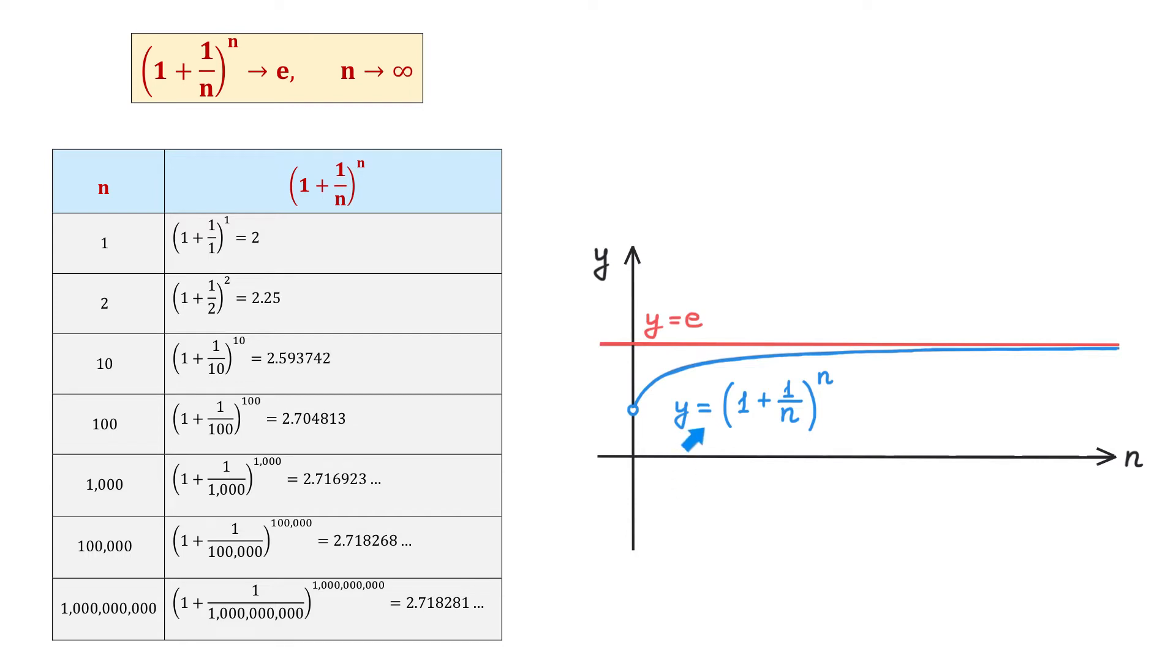And below, we see the graph of the equation y equals 1 plus 1 over n to the n's power. What we also see from the graph is that when n approaches infinity, this graph gets closer and closer to the graph of y equals e.